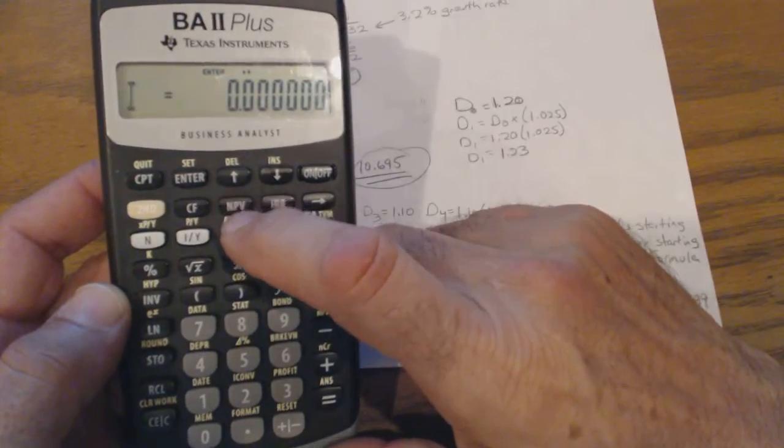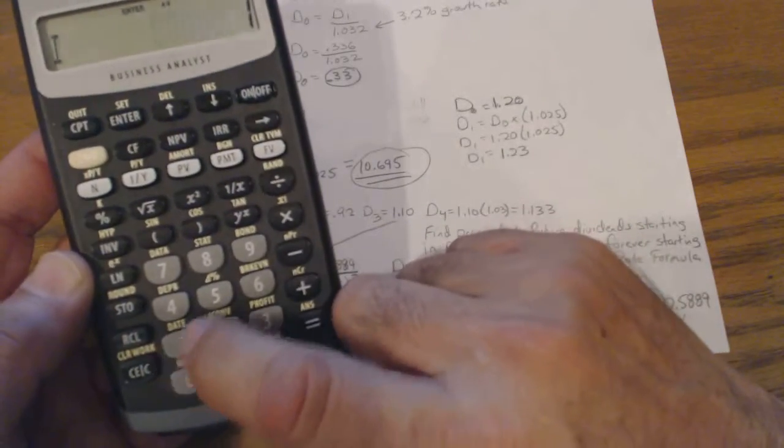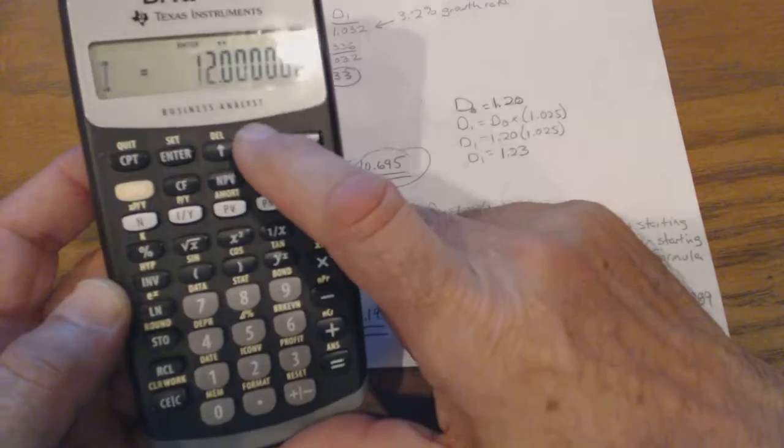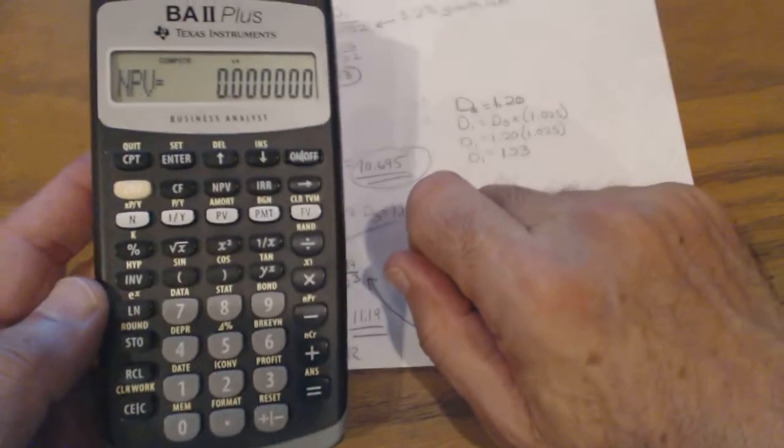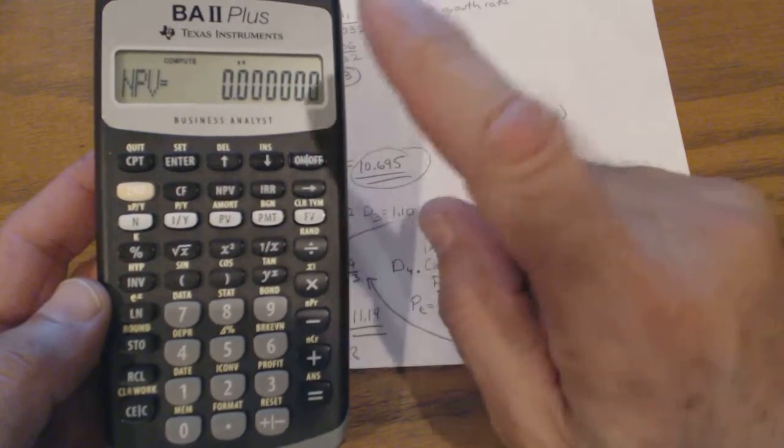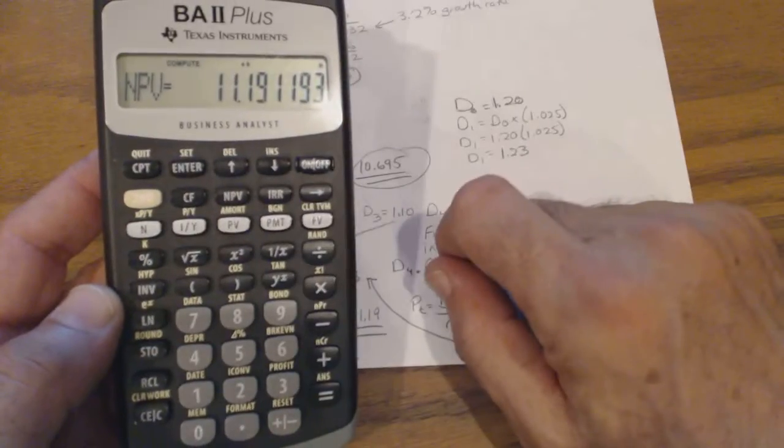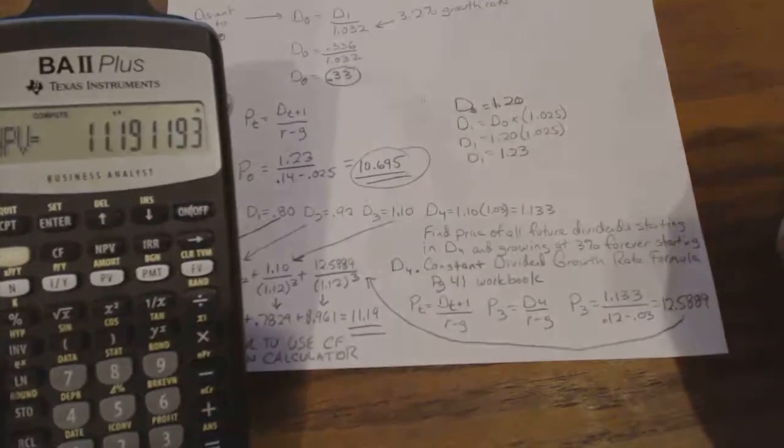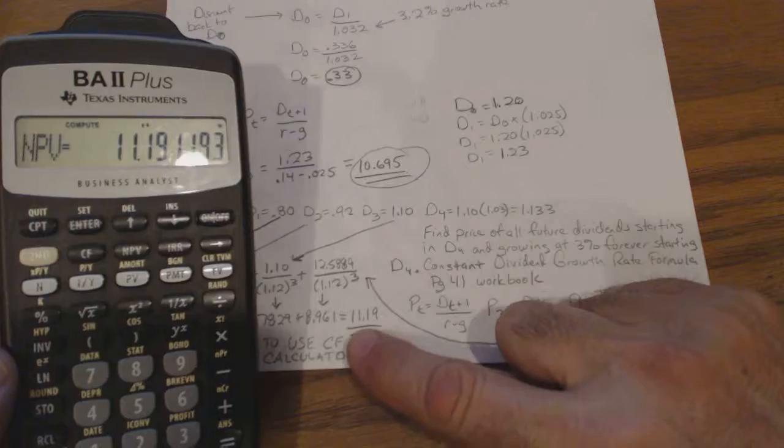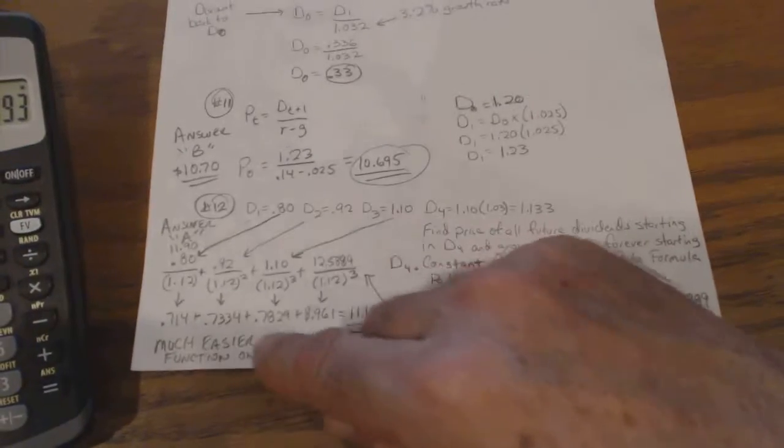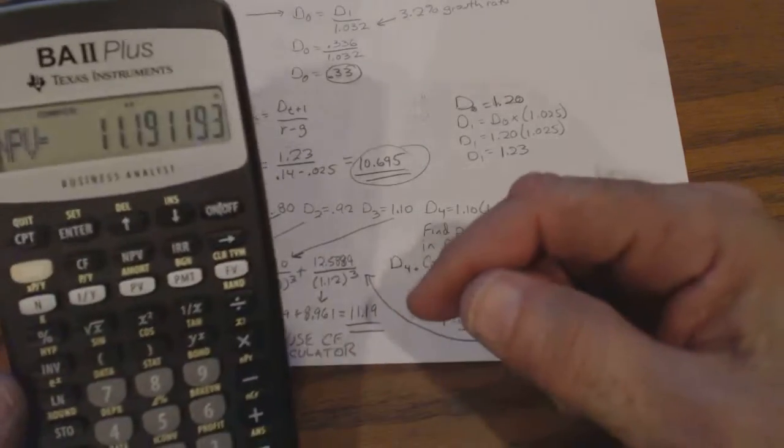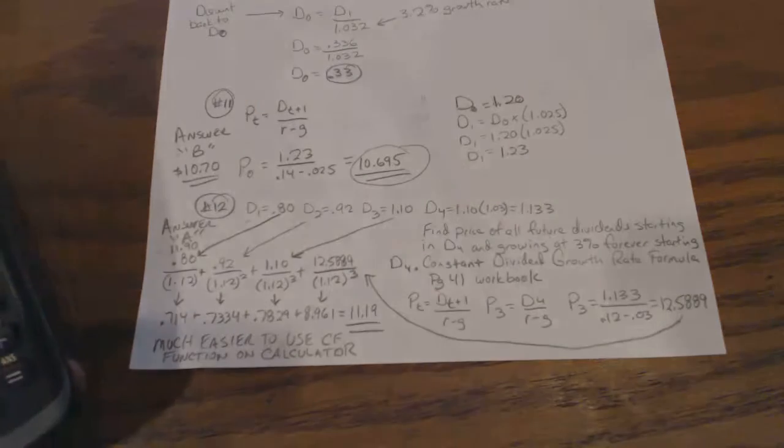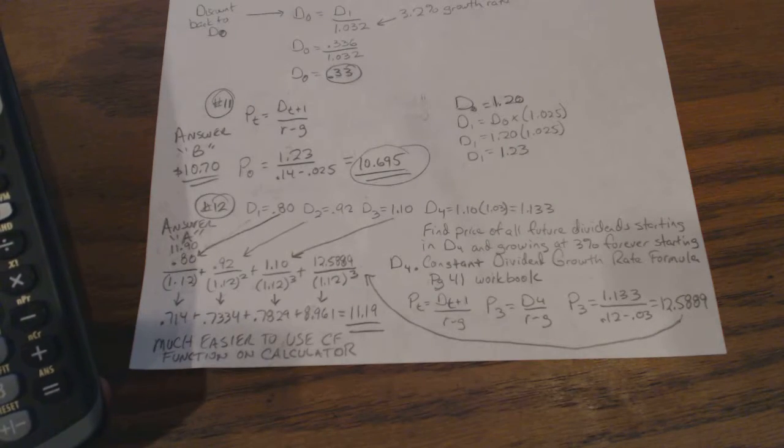You hit net present value, remember it asks for the interest rate. Now you know the interest rate is 12 percent, enter, down, and it's got net present value zero. Remember that's because you got to hit compute. And so the net present value of all those cash flows is 11.19, which is the same if you've gone through with these calculations and add them all together. That's the answers for the rest of part two.